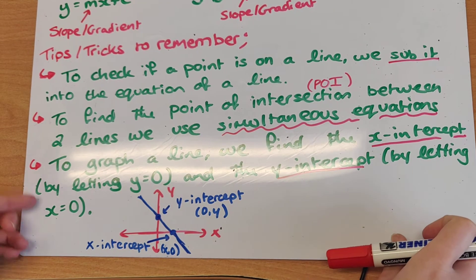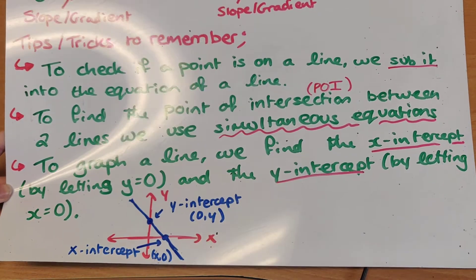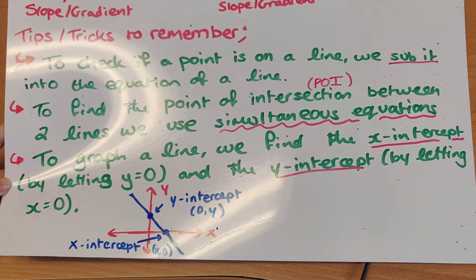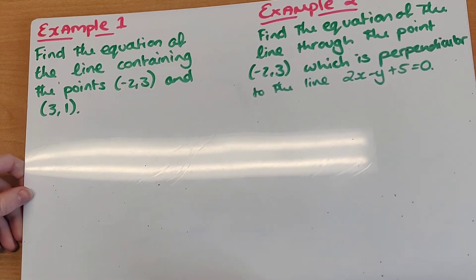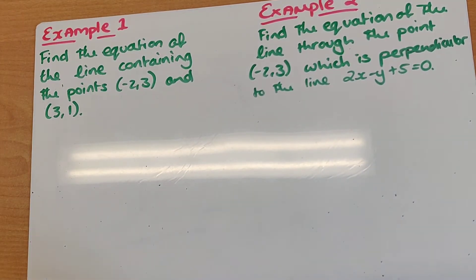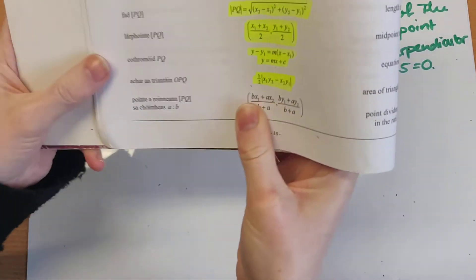We're going to look at two problems now. Take a minute to go back through those tricks — write them down if needed — and then we're going to look at Example 1 and Example 2. Example 1 says: find the equation of the line containing the points (−2, 3) and (3, 1). So this time it asks me to find the equation of a line.